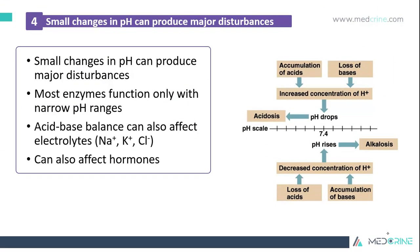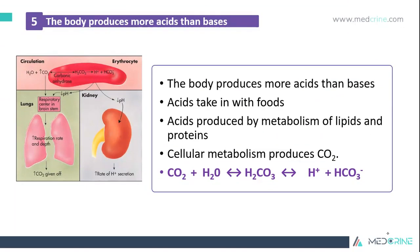Small changes in pH can lead to major disturbances in this homeostatic balance, and most enzymes function only within narrow pH ranges. Acid-base balance can also affect electrolytes, for example sodium, potassium, and chloride ions, and it can also affect hormones. The body usually produces more acids than bases, because acids can be taken in with foods and also produced by metabolism of lipids and protein.